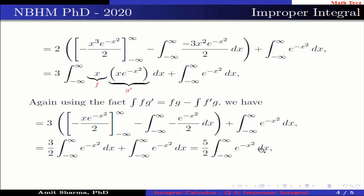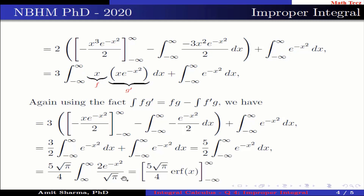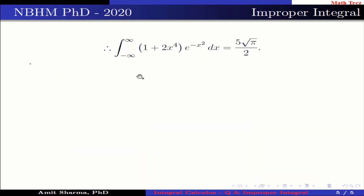Now, multiplying and dividing by 2√π, we have (5√π/4)·∫_{−∞}^{∞} (2/√π)·e^(−x²) dx, and we know that (2/√π)·e^(−x²) is the error function integrand. This implies (5√π/4)·[erf(x)]_{−∞}^{∞} = (5√π/4)·(1 + 1), since erf(∞) = 1 and erf(−∞) = −1. This further simplifies to 5√π/2. Therefore, the value of the integration from −∞ to ∞ of (1 + 2x⁴)·e^(−x²) dx is equal to 5√π/2.